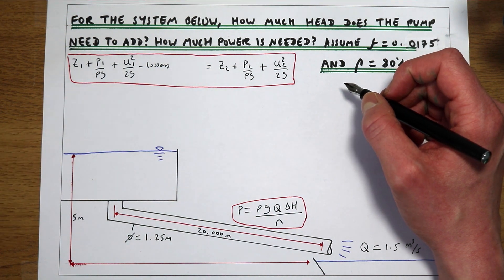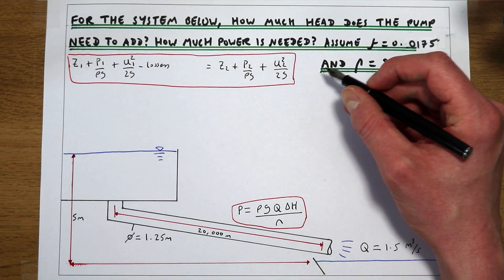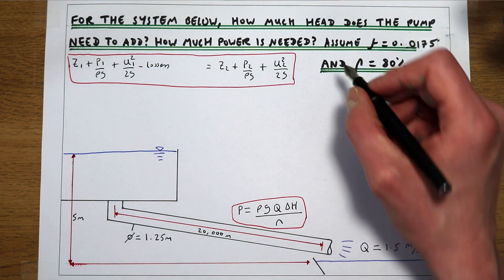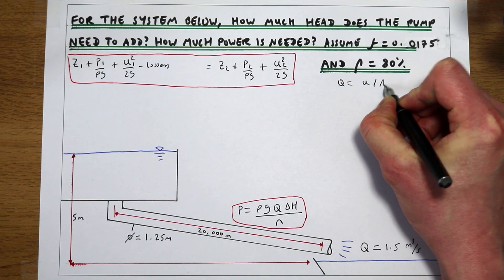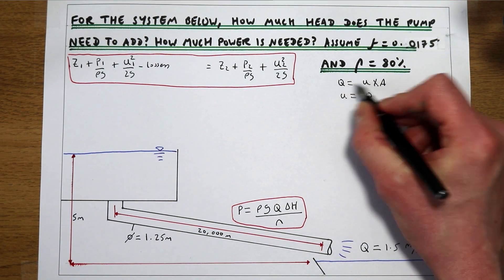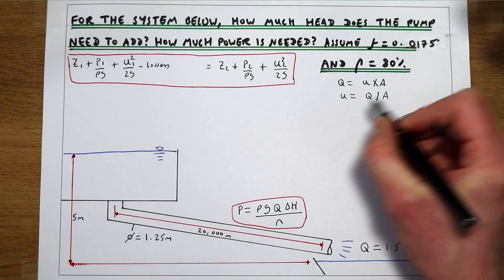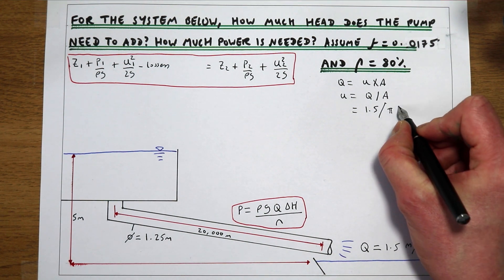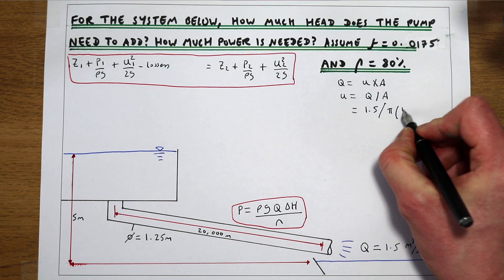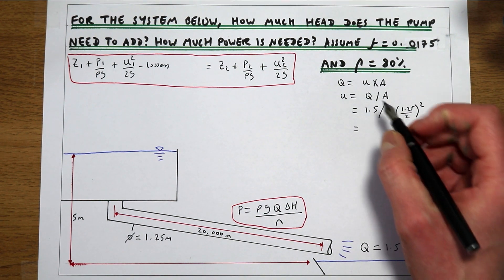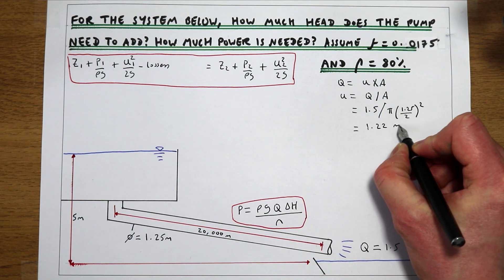Before we go any further we can work out what the velocity needs to be in this system. We're told the flow rate is required to be 1.5 metres cubed per second and we know the diameter of the pipe, so we can work out the mean velocity. We know that Q equals U times A, so U equals Q over A. Q is 1.5 m³/s and A is the area of the pipe, π r², where the diameter is 1.25 metres so the radius is 0.625 metres. So the velocity we need in our pipe is 1.22 metres per second.